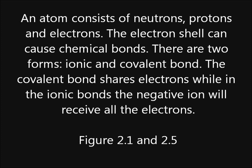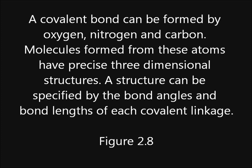The covalent bond shares electrons, while in ionic bonds the negative ion will receive all the electrons. A covalent bond can be formed by oxygen, nitrogen and carbon. Molecules formed from these atoms have precise three-dimensional structures, which can be specified by the bond angles and bond lengths of each covalent linkage.